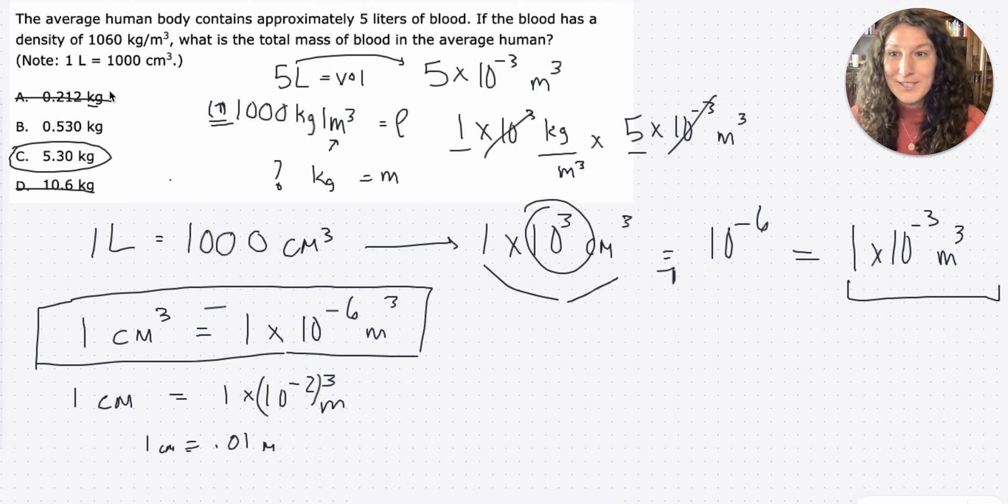The second thing we can do with reasonable numbers, if you weren't sure about this conversion, is think about the human body. They're telling us that the human body contains approximately 5 liters of blood. That is more than a gallon for us U.S. people. A gallon is about 3.7 liters. If you've ever held a gallon in your hand, it weighs a few pounds. It's not light. And a kilogram is around 2.2 pounds.